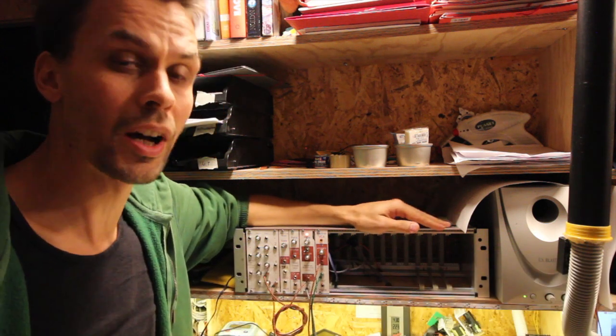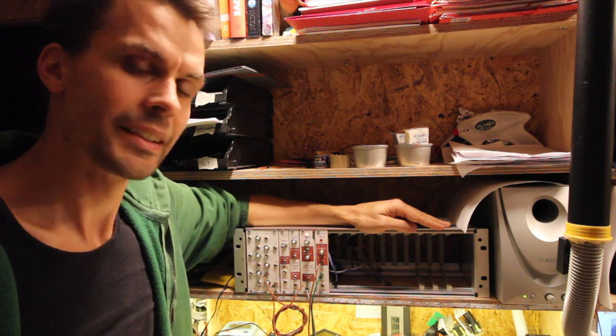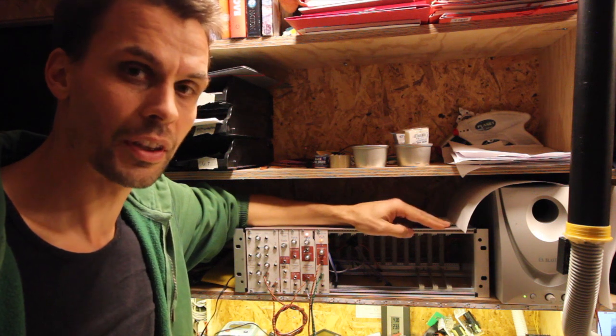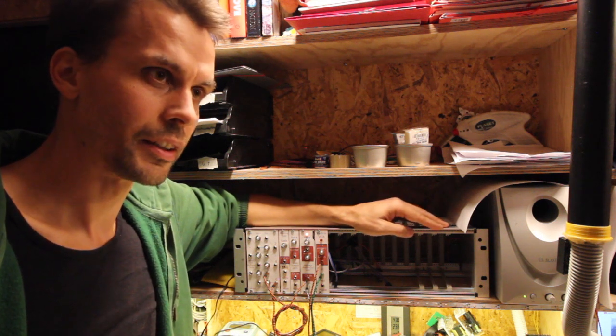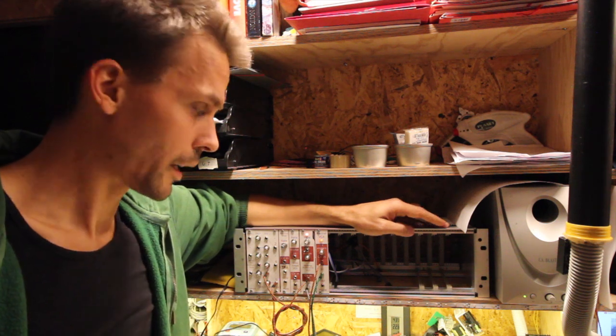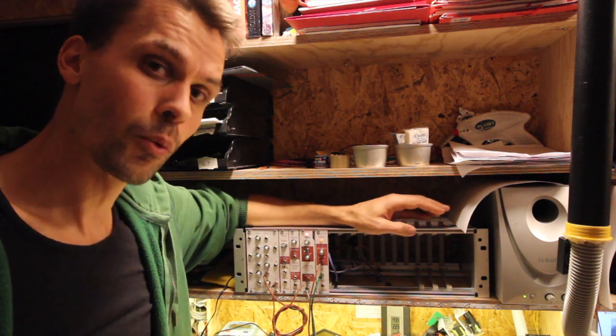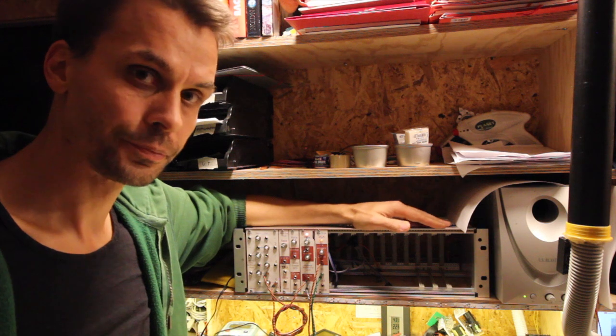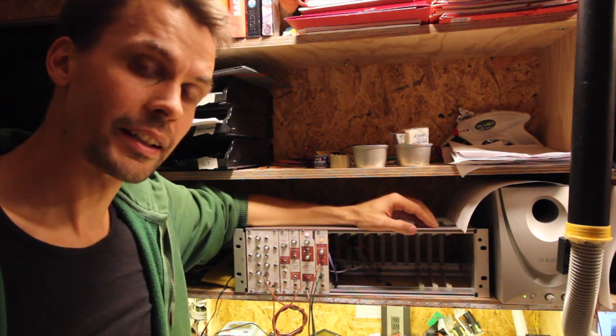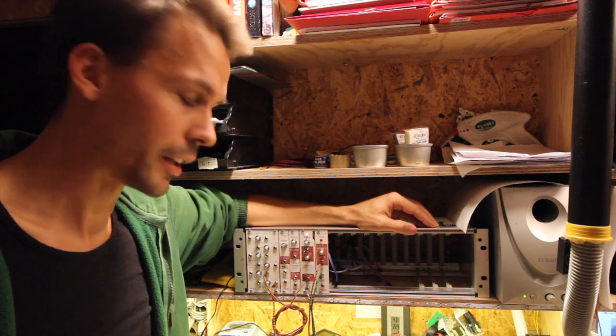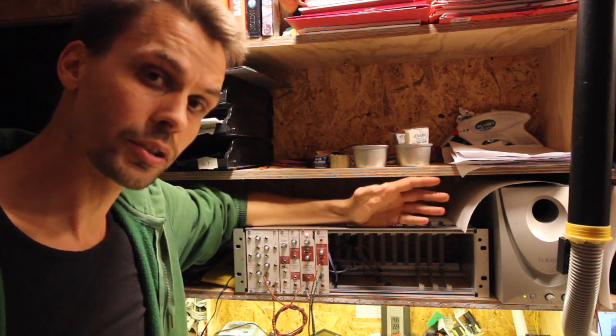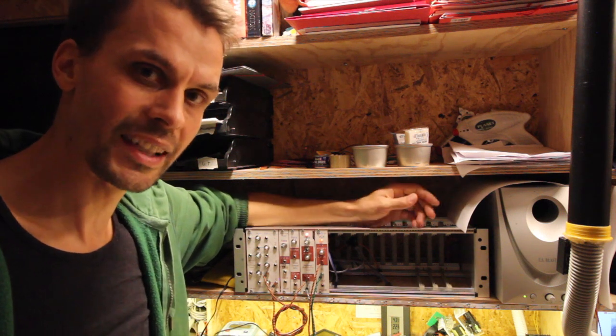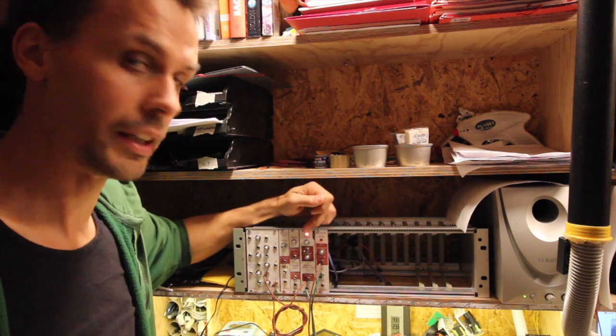While looking on the internet, finding simple to build VCAs is difficult. They are mostly quite advanced to build, but one of the really simple ones that you can find is the VACTROL. As I said in the last episode, a VACTROL can also be used as a potentiometer to change CV signals in, for example, a VCO.